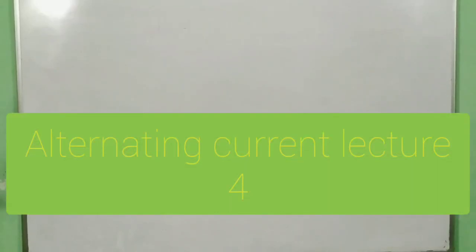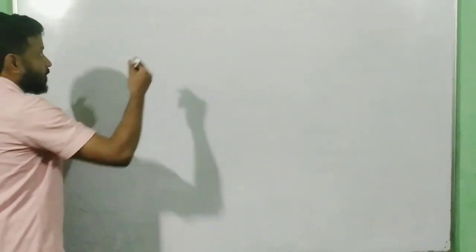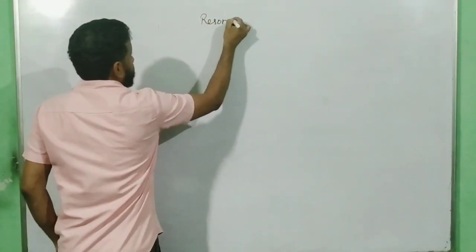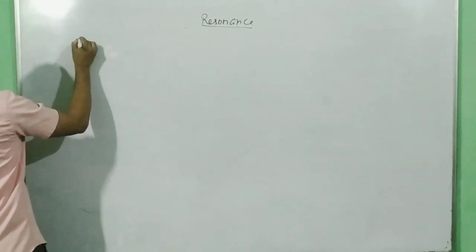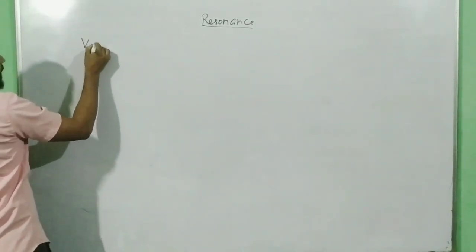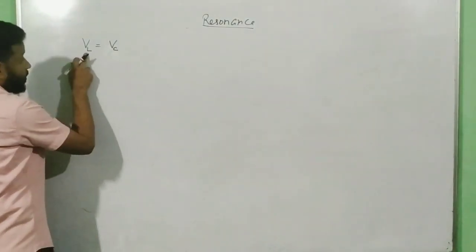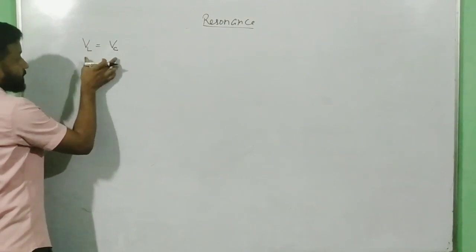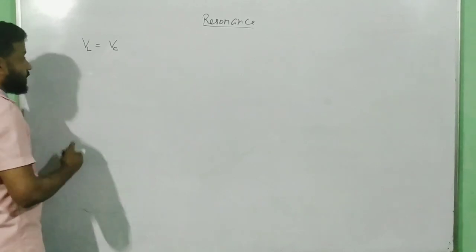Hello students, today we are going to see the detailed analysis of LCR circuit in resonance mode. In alternating current, the resonance mode is where VL is equal to VC. That means the potential across L and the potential across the capacitor are equal, but since they are 180 degrees out of phase, they cancel each other.